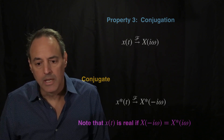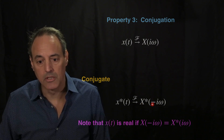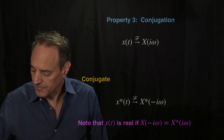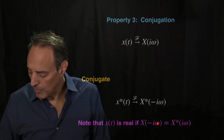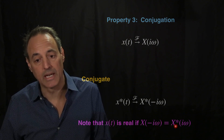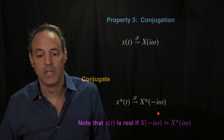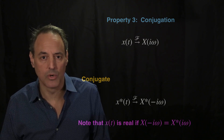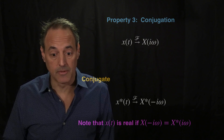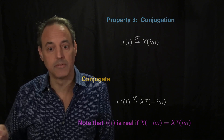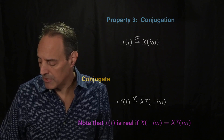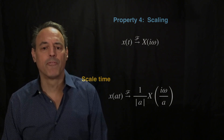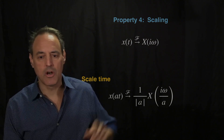An important note: if x(t) is real, then x evaluated at minus i omega equals x-star at i omega. This symmetry constraint essentially characterizes when a signal is real-valued in the time domain.